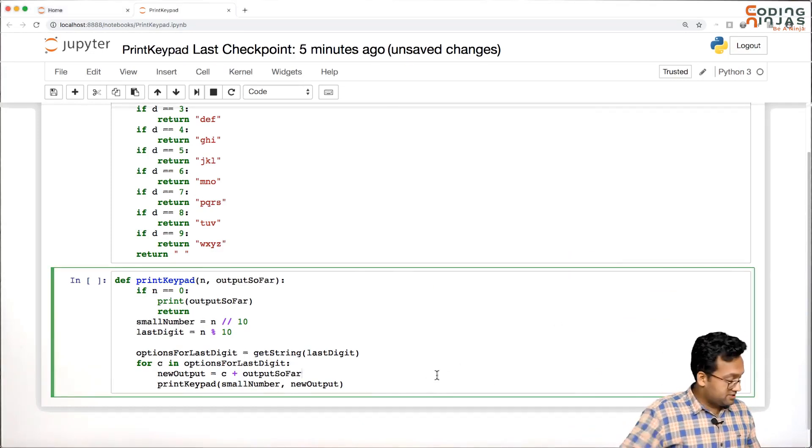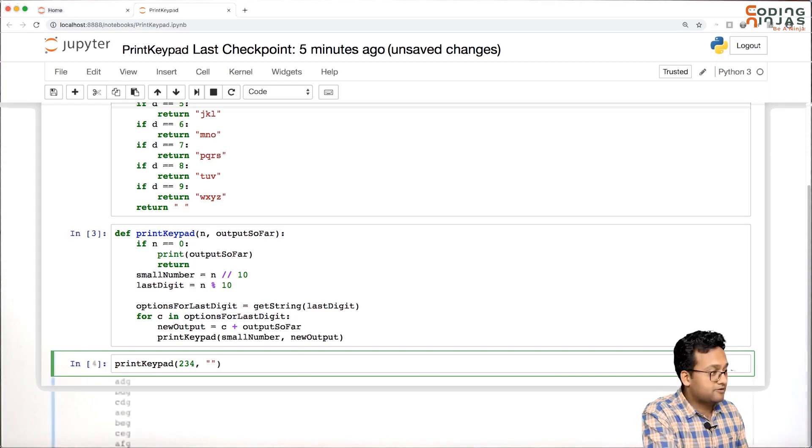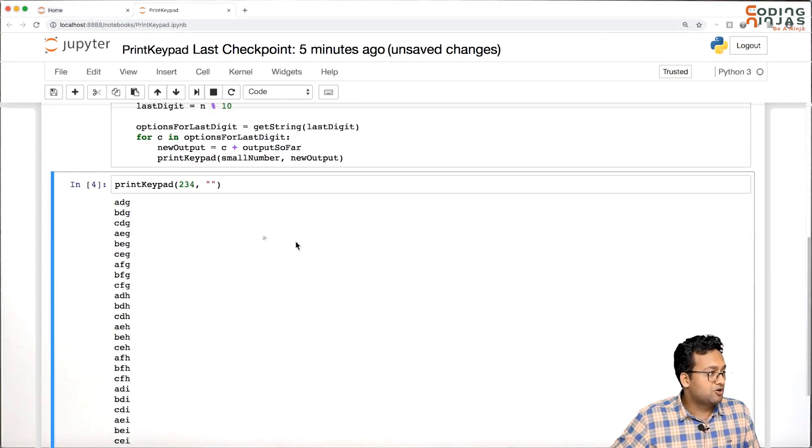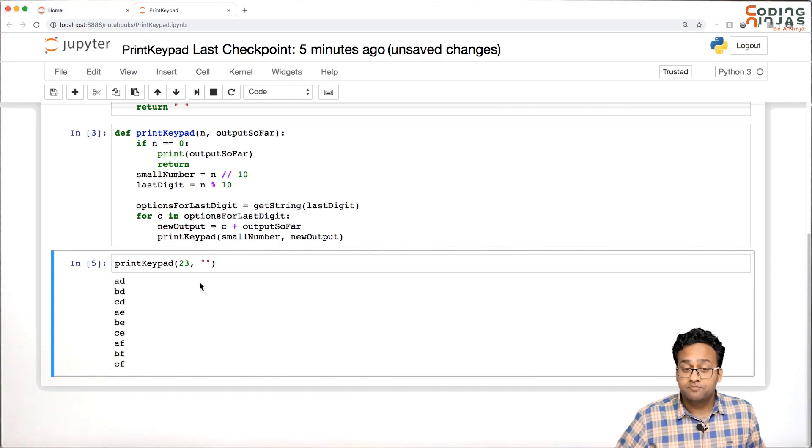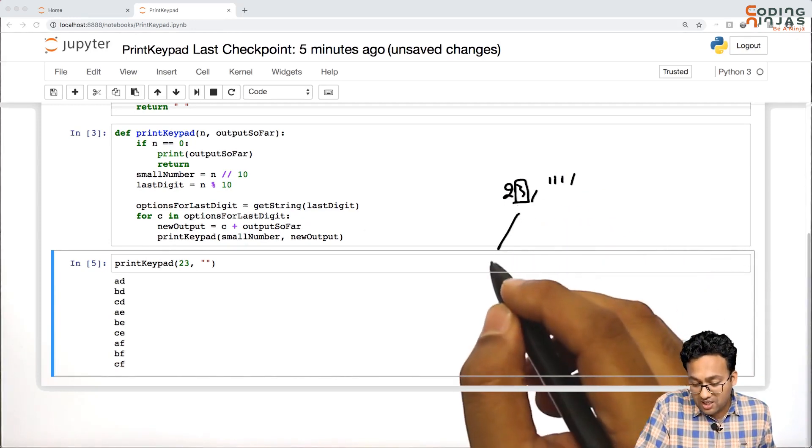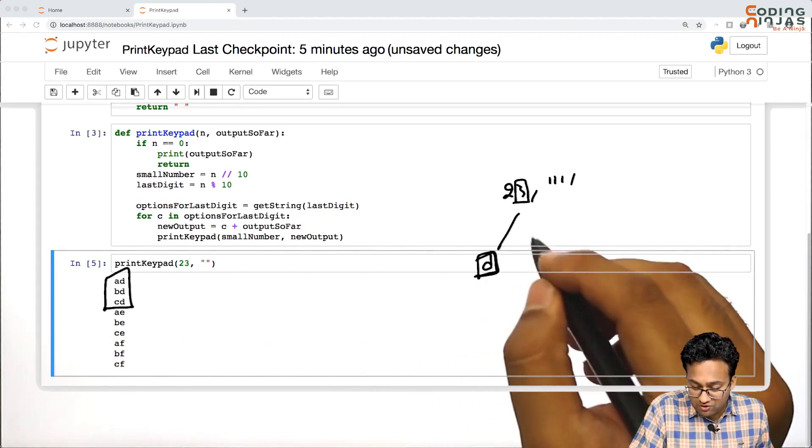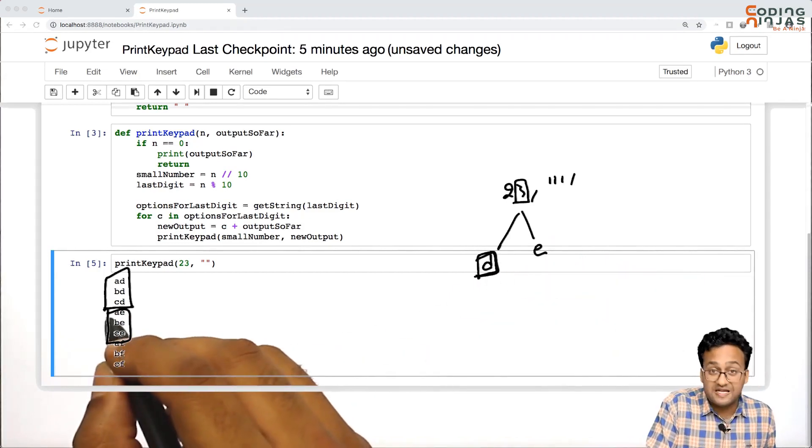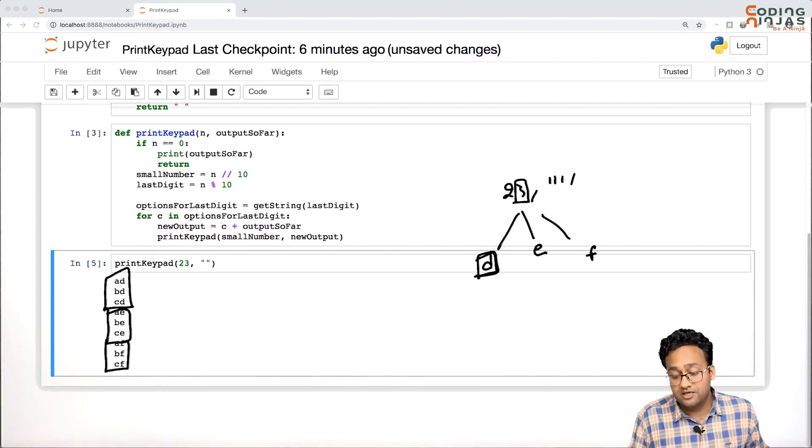Let's see if this actually works. Print keypad 234, and initially I'm passing it an empty string because that's the output so far. You have all possible combinations. It would be easier to see it for 23 - looks like exactly what we wanted, and we are able to print all the combinations. You have 23, so first you made a decision on 3 and you called corresponding to d, so everything with d is getting printed first. Once you're done with d, then you made a call for e, so everything from e is getting printed after that. In the end, you made a call corresponding to f, and that's why everything with f is getting printed at the end.